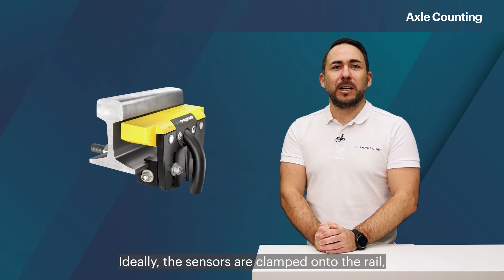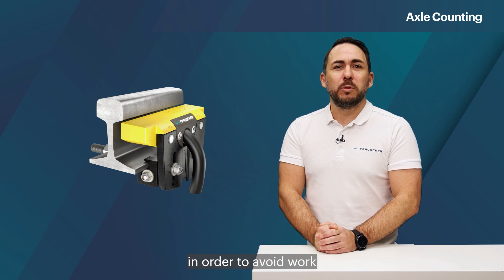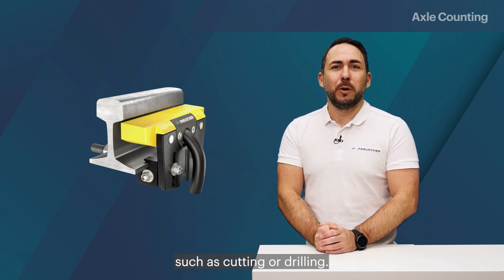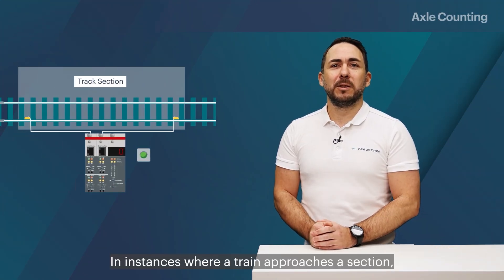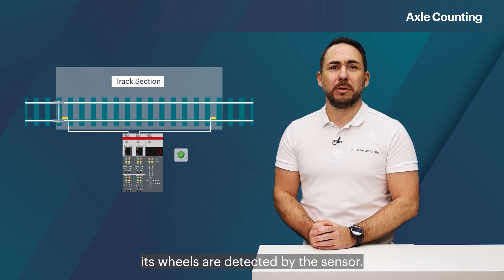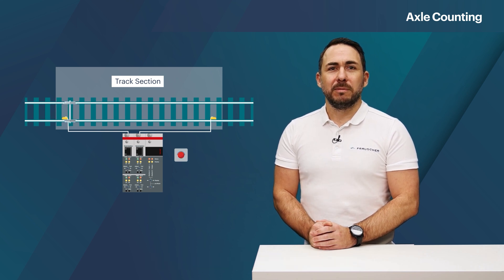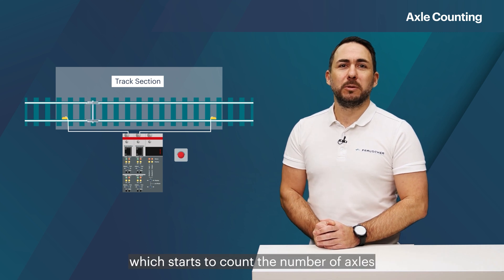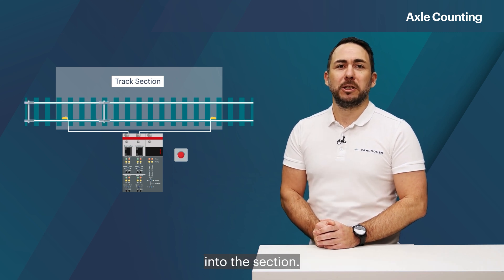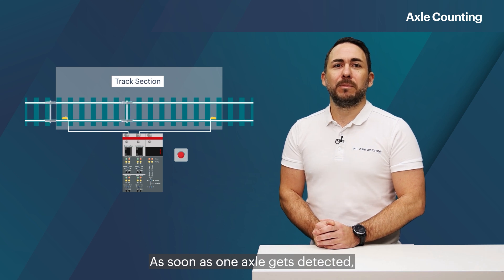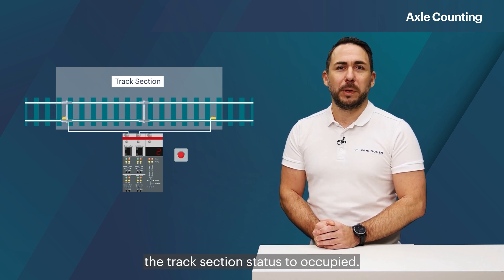Ideally, the sensors are clamped onto the rail in order to avoid work which could weaken the rail structure, such as cutting or drilling. In instances where a train approaches a section, its wheels are detected by the sensor. This information is evaluated by an axle counting logic which starts to count the number of axles into the section. As soon as one axle gets detected, the system also switches the track section status to occupied.